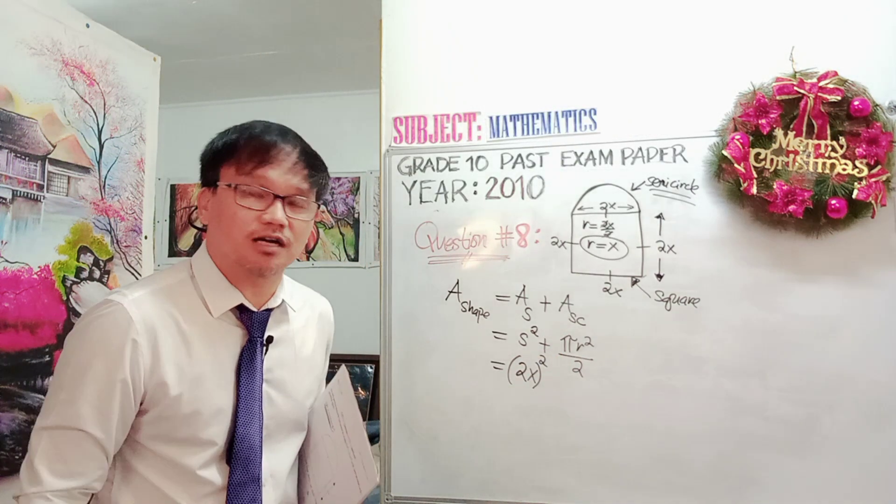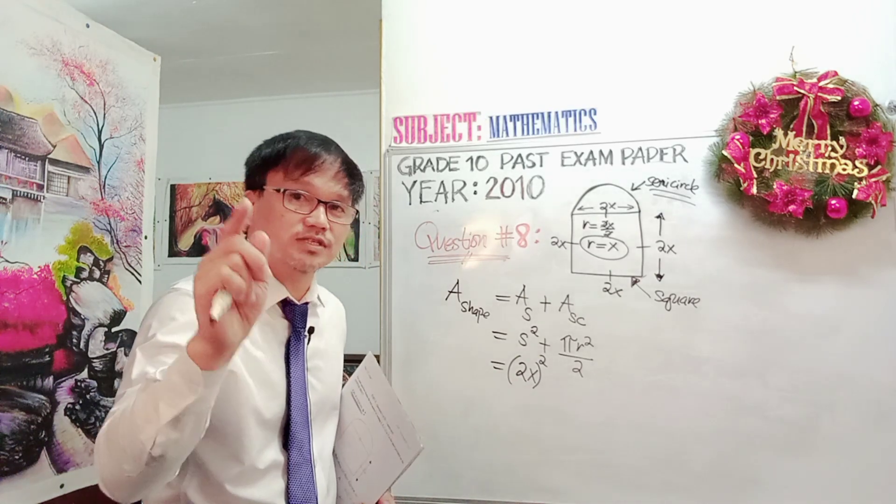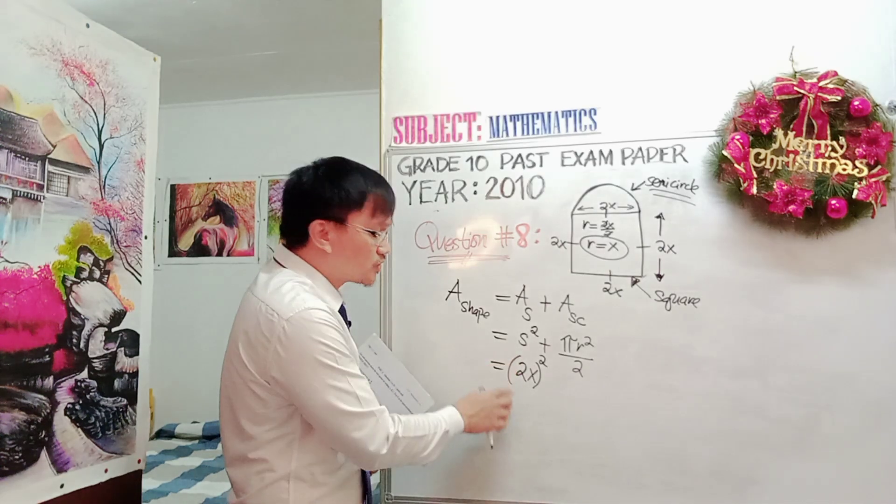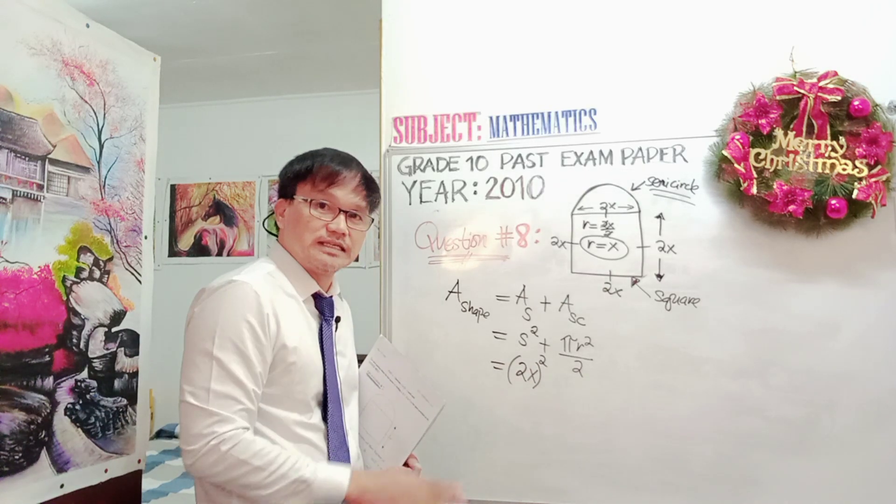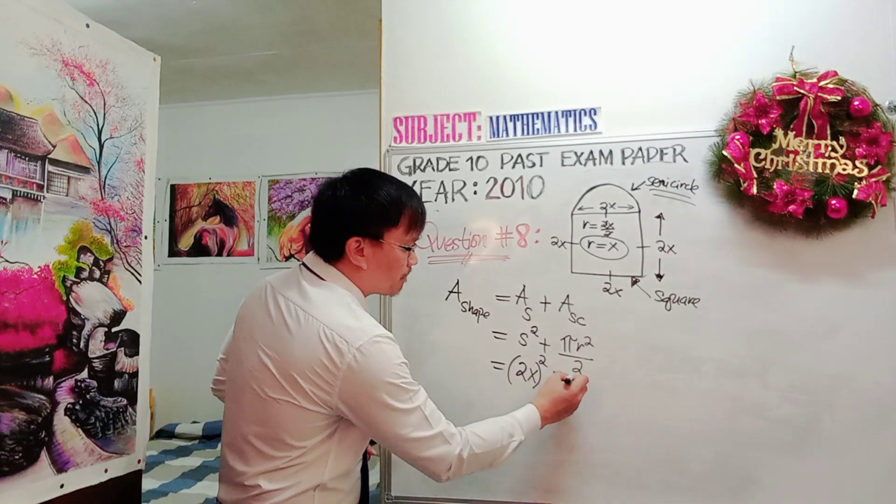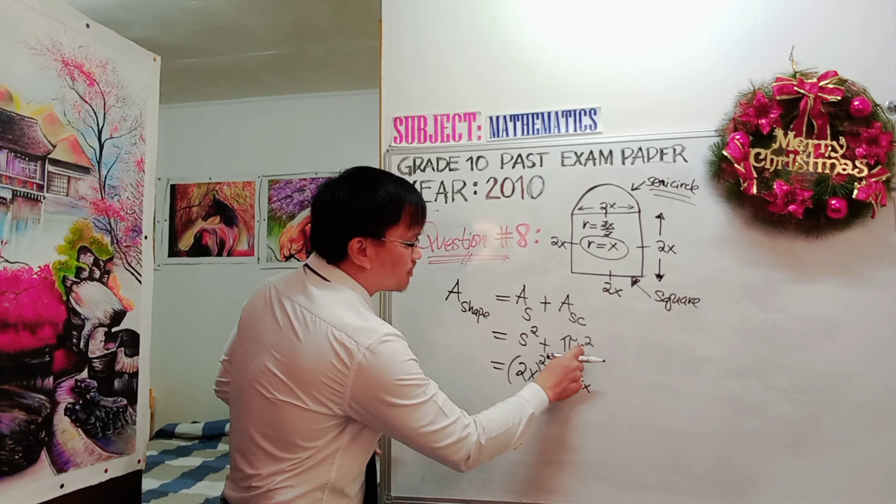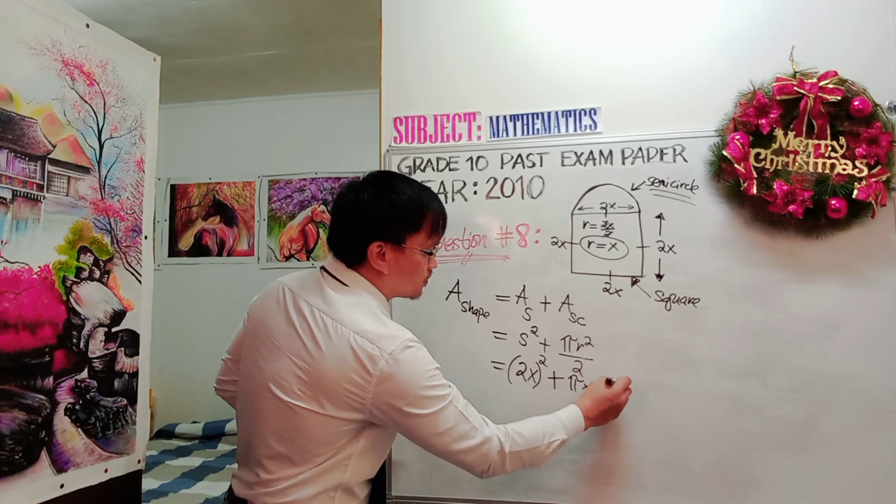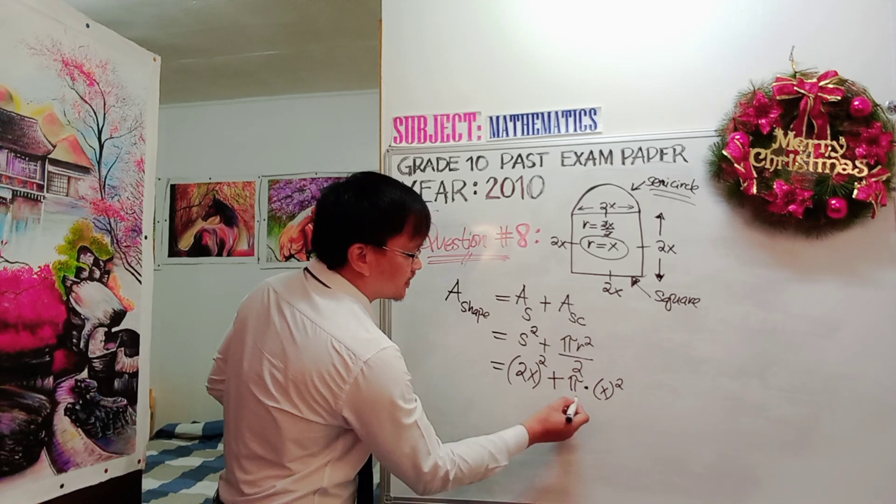Take note, this is the very common mistake of students. That's why it's very important that when you substitute the values, you must always enclose it with brackets so that later when you simplify the expression, it is clear for you to perform. We have plus pi r square, times the value of our radius is x, so that is x to the power of 2.